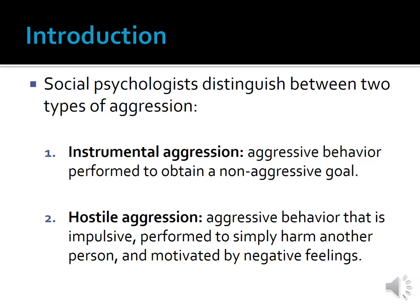Social psychologists tend to distinguish between two types of aggression: instrumental aggression and hostile aggression. Instrumental aggression is aggressive behavior performed to attain a non-aggressive goal — hurting someone is a means to reach some goal. An example is when a mugger punches a guy in the street to take his wallet. The mugger didn't punch the guy just to hurt him; rather, he punched him to get the wallet. Hostile aggression, on the other hand, is aggressive behavior that is impulsive, performed simply to harm another person, and motivated by negative feelings. With hostile aggression, hurting someone is the actual goal, and the motivation is anger, not goal-oriented calculation.